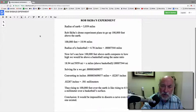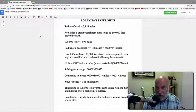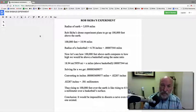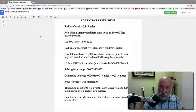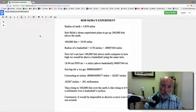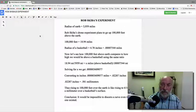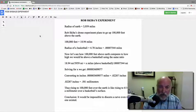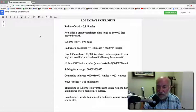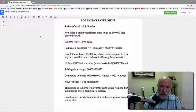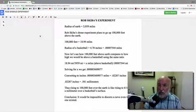The radius of the Earth is 3,959 miles. Now, Rob's experiment will take a drone up to 100,000 feet above the Earth. And if you convert that to miles, that's 18.94 miles. So I thought, OK, let's look at a basketball. The radius of a basketball is approximately 4.78 inches. And if you convert that to miles, it's 0.00007544 miles.